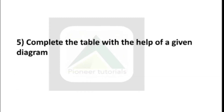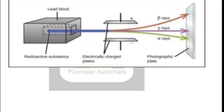Question number 5: Complete the table with the help of the given diagram. In the diagram, the left-hand side shows a radioactive substance. When the rays are passed through an electrically charged plate, we get three rays — alpha, beta, and gamma — which get spotted on the photographic plate. We have to write about these. So, we will start with alpha.